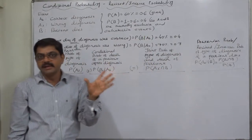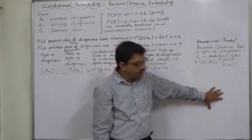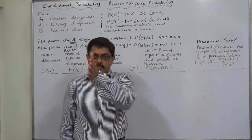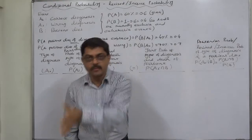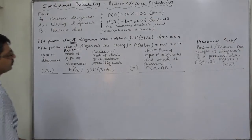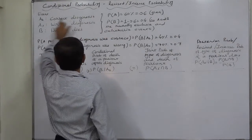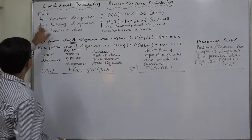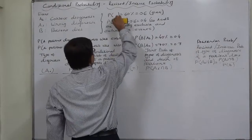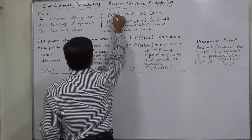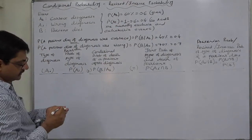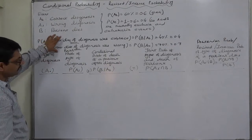We are going to calculate both possible posterior probabilities: probability of correct diagnosis if the patient died, and probability of wrong diagnosis if the patient dies. According to the question, if we take A1 as correct diagnosis, A2 as wrong diagnosis, and B as the event that a patient dies, then P(A1) = 0.6, P(A2) = 1 − 0.6 = 0.4.